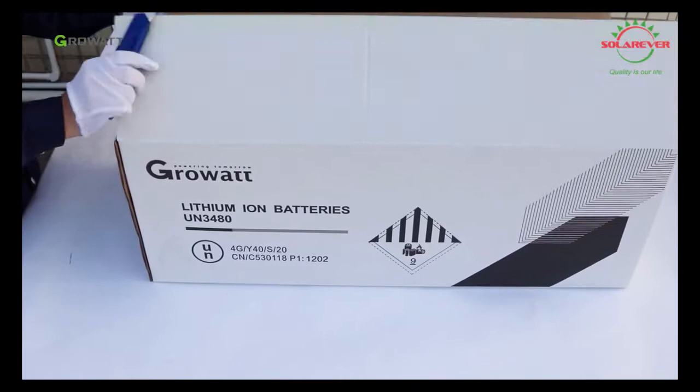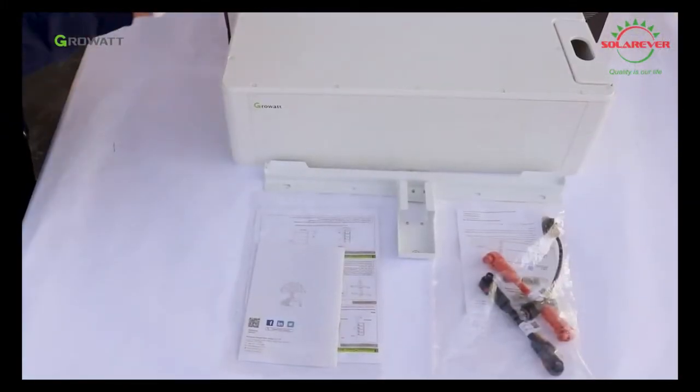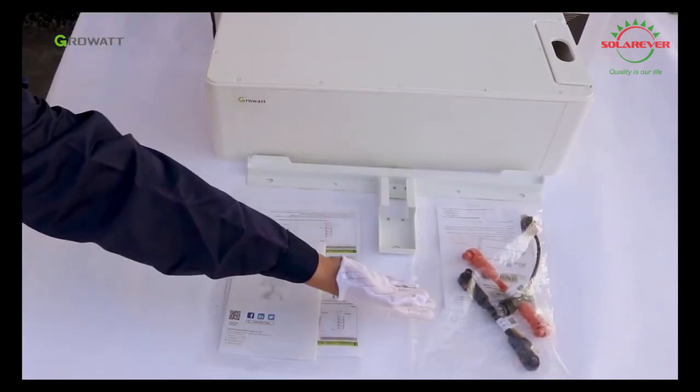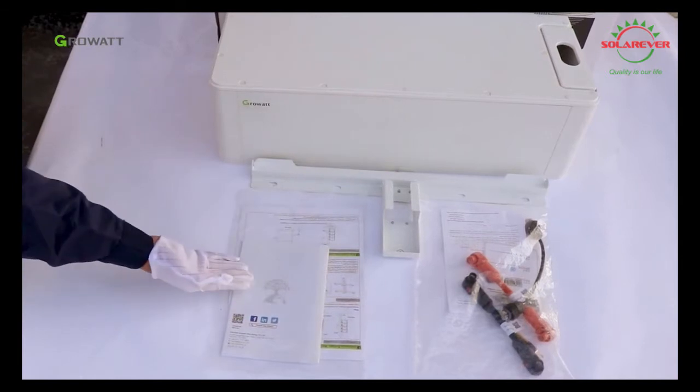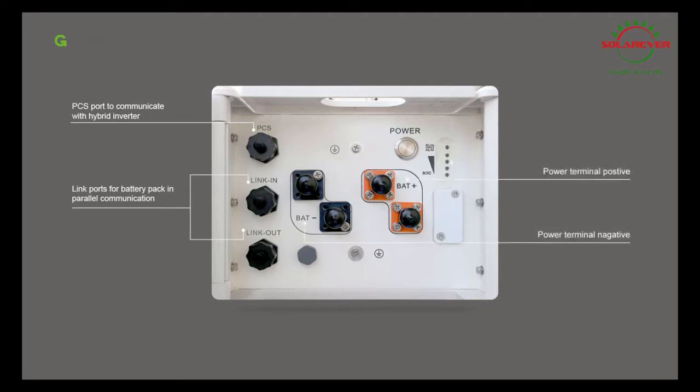Unpack the battery package. Inside are an arc 2.5 liters AI battery, power and communication cables, wall bracket, user manual, and warranty card. The PCS port is used to communicate with the hybrid inverter. The link in and link out ports are for battery pack parallel communication. The battery has negative and positive terminals.